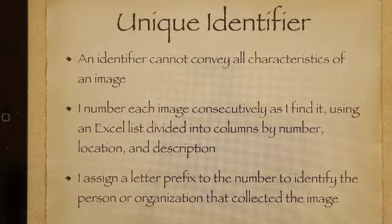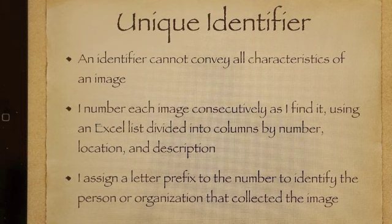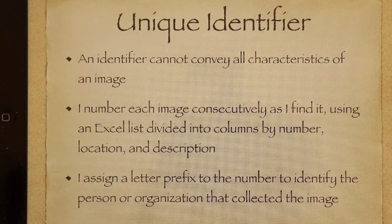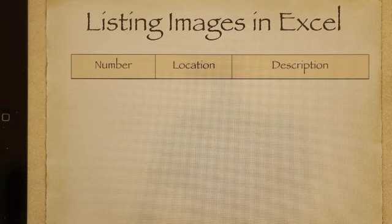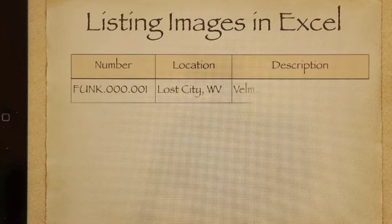An identifier cannot convey all characteristics of an image, so I number each image consecutively as I find it, using an Excel list divided into columns by number, location, and description. I assign a letter prefix to the number to identify the person or organization that collected the image. This might give me a clue as to who the subject or location was in the image. Listing images in Excel by number, location, and description will look like this.